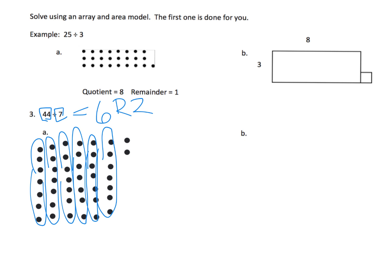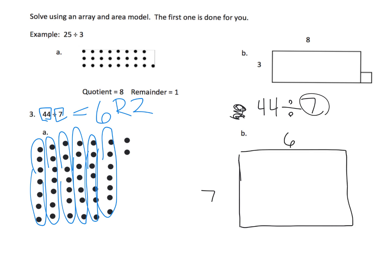What is that going to look like with the area model? We're going to have a height of 7 because it says 44 divided by 7. This 7 says our rectangle's height is going to be 7. Because we just did the array model, we know the width is going to be 6. That gives us 42 square units inside, and we know we have 2 little cubes left over. Notice I put the 42 in here — I like to point out how many square units we used already.